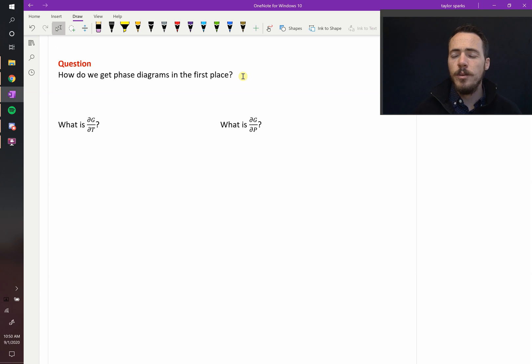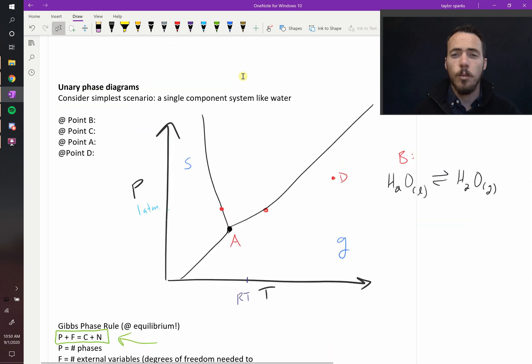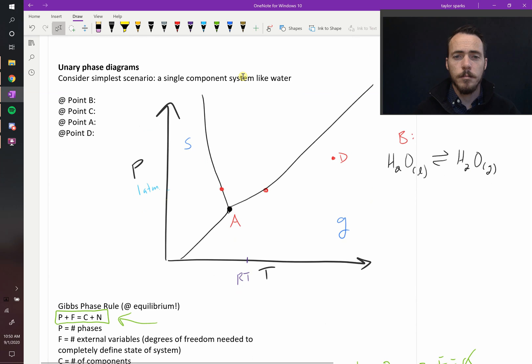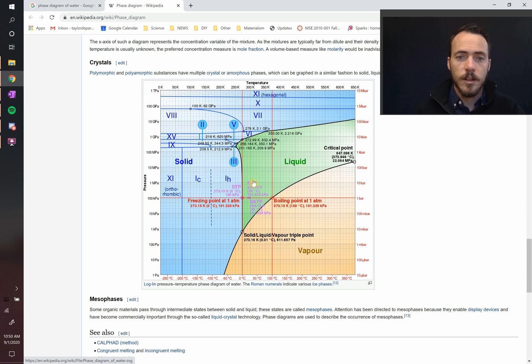All right, so far we've shown you the phase diagram for a system like water, which is a really simple system. Now, the actual phase diagram for water looks different than this cartoon example. Here's what it actually looks like.